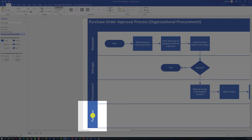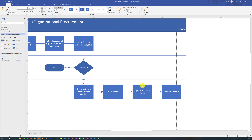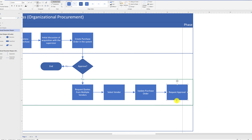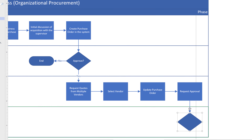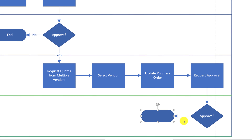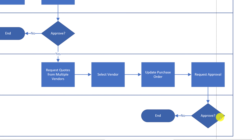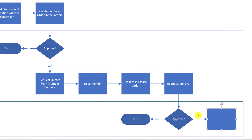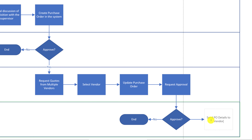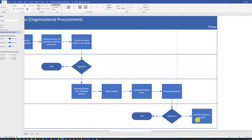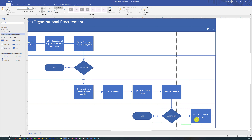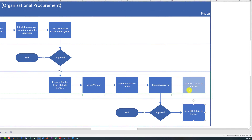If you prefer to avoid acronyms, you might add the full name 'Chief Financial Officer' in the swim lane. After receiving the purchase order, the CFO decides whether to proceed with acquiring the goods or services. If the CFO decides not to proceed, the process ends. If the CFO approves, it goes back to procurement, who sends the purchase order details to the vendor. If a shape was incorrectly placed in the CFO swim lane, simply drag it into the procurement swim lane.